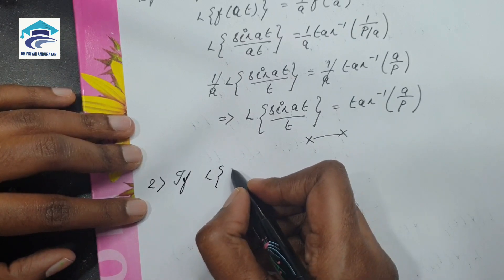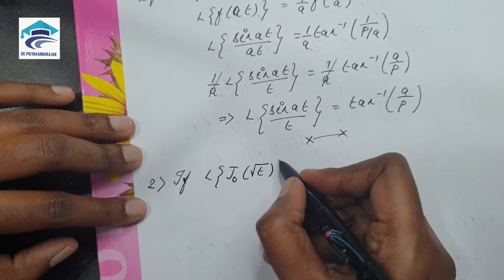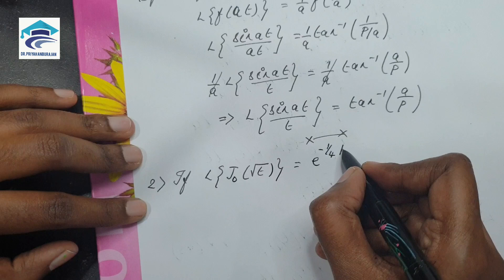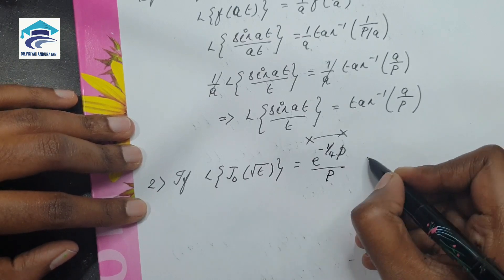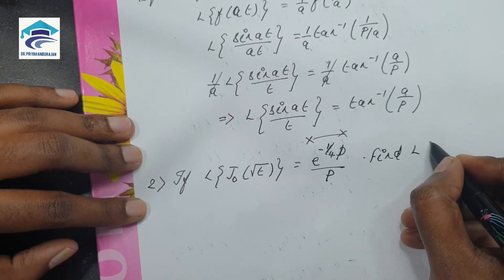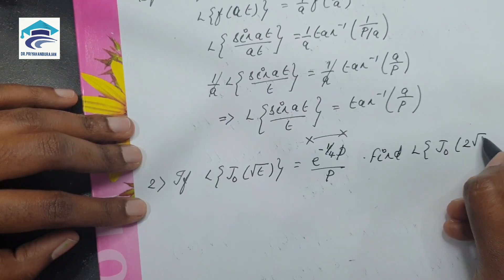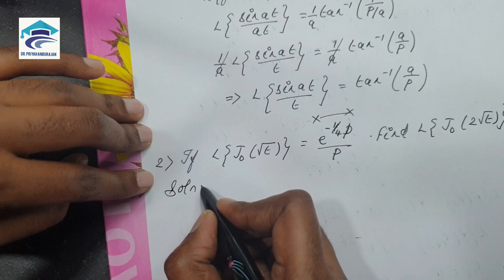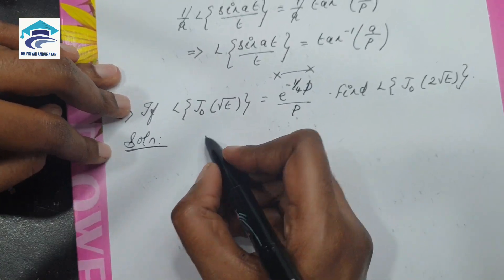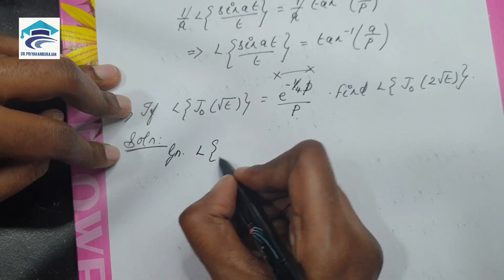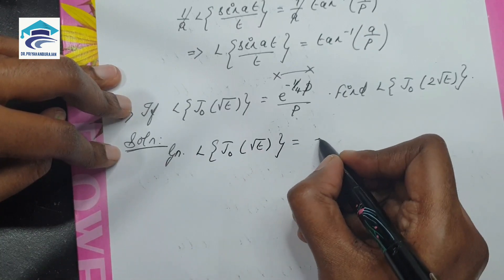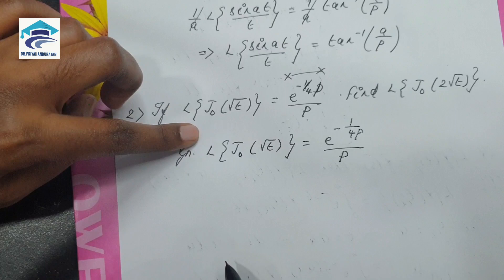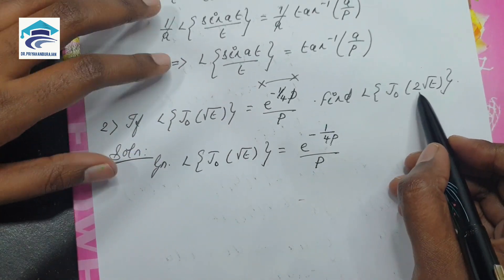In the second problem, given that L of J₀(√t) is equal to e to the power minus 1/(4p) divided by p, we need to find L of J₀(2√t).